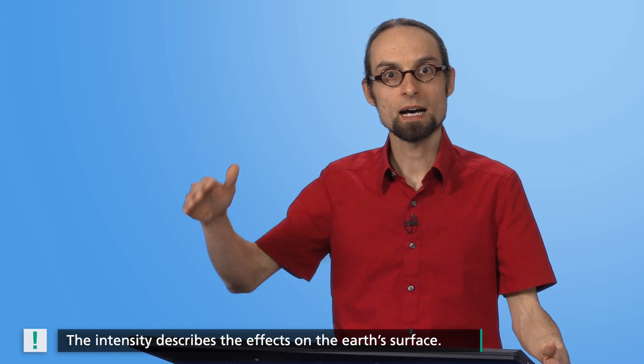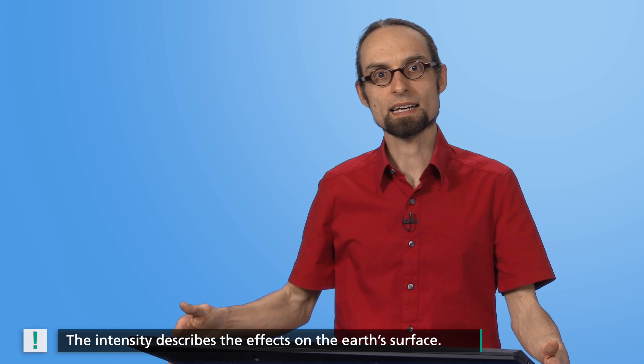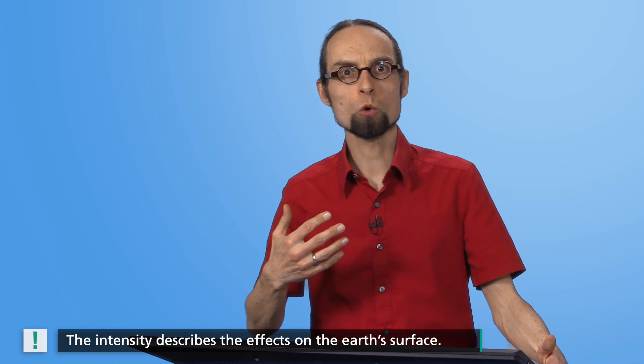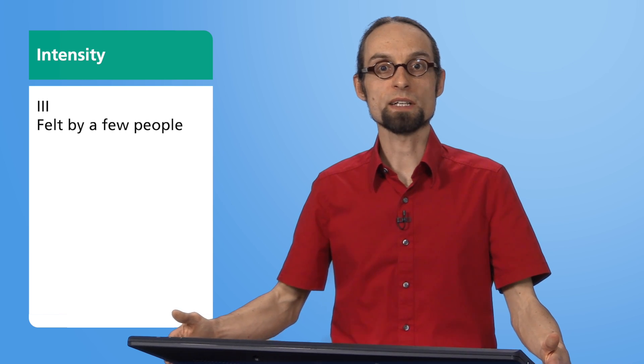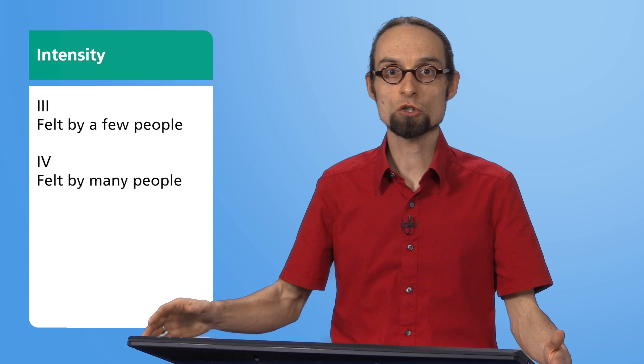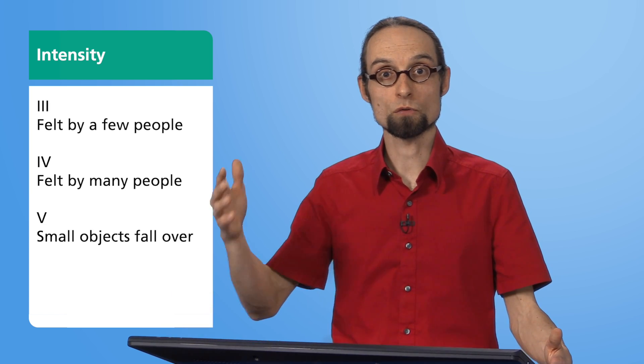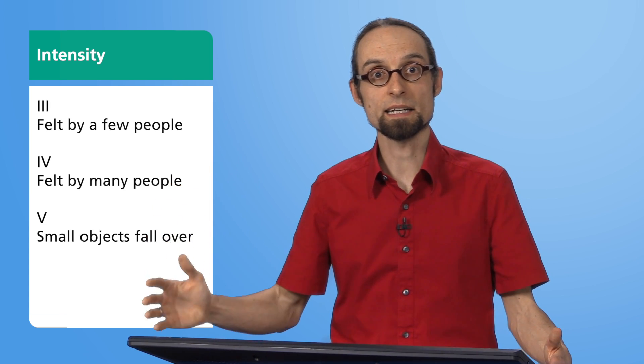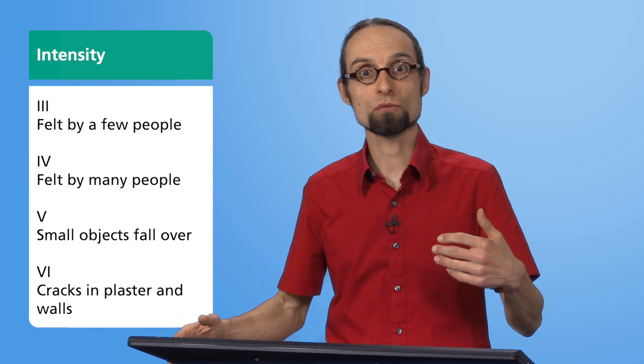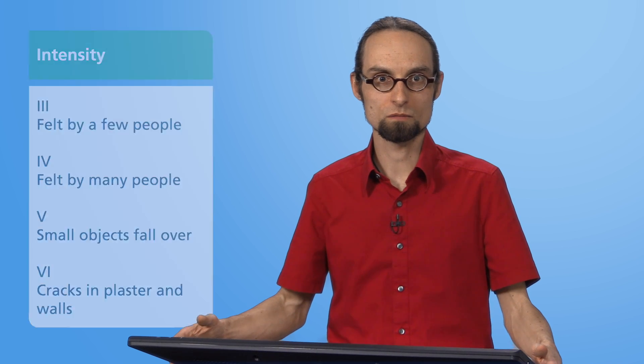Unlike the magnitude, the intensity of a quake describes its effects on the Earth's surface. It indicates whether the earthquake was perceptible, if cracks occurred on the walls of buildings, or even if building sections collapsed. An intensity of 3 means that the tremors may be felt by a few people, while a value of 4 means that many people will feel it. At an intensity of 5, small objects are already falling over in your apartment. And at a value of 6, damage in the form of cracks in the plaster and in walls may occur.